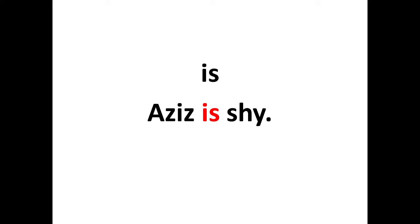The sentence is 'Aziz is shy.' Aziz is shy. See, children, again the sight word is highlighted in red. 'Is' is coming in red color.